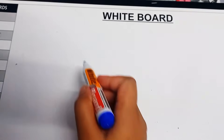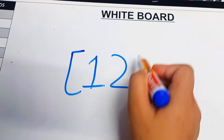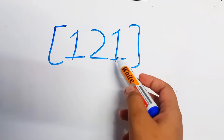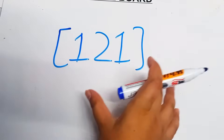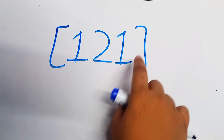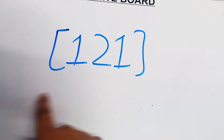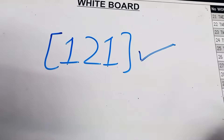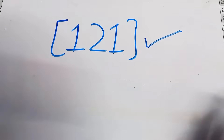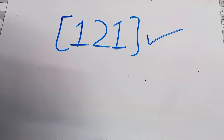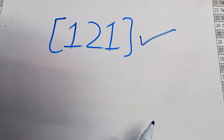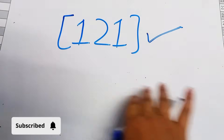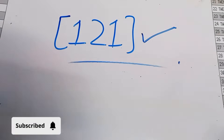So the Miller indices for direction B are [1 2 1]. You write the number from x first, then y, then z — no spaces, no commas, enclosed in square brackets. This is how you define the Miller indices for directions in a cubic unit cell. In the next video we'll be doing this for direction C. You can find it in the solid state physics playlist. Goodbye, take care — like, share, and subscribe.